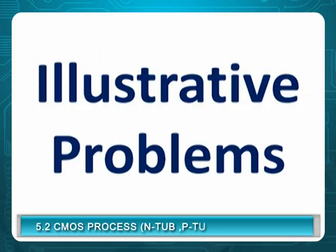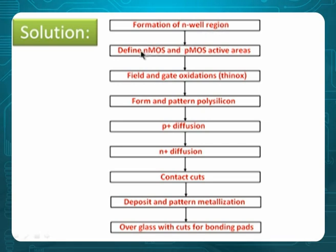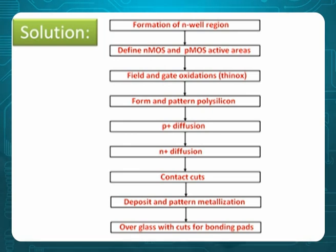Illustrative example Question 1: What are the major steps in the N-well process? Step 1: formation of N-well. Step 2: N-MOS and P-MOS active areas developed. Step 3: thin silicon dioxide layer. Step 4: polysilicon pattern deposited. Step 5: P-plus diffusion. Step 6: N-plus diffusion. Step 7: contact cuts. Step 8: metallization for required connections. This flowchart represents all the theoretical steps for the N-well process.